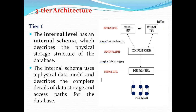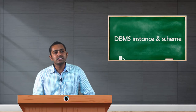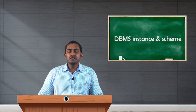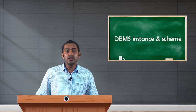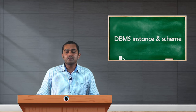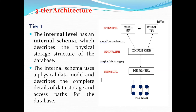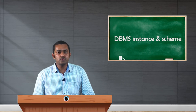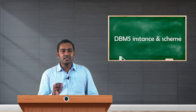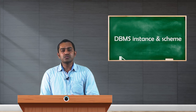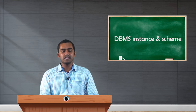The internal schema uses a physical data model and describes the complete details of data storage and access paths for the database. Just as we need architectural patterns to develop an application, we need models or patterns to design a database as well. Using those patterns, the database is created in the internal schema, and all details are stored there. It also provides the access path — specifying where the database is stored. Neither the server nor the client will know the storage location unless the path is specified. All physical storage structures are stored at this tier.